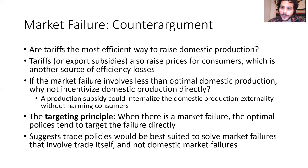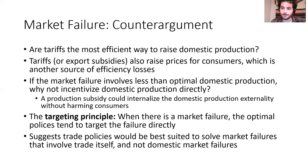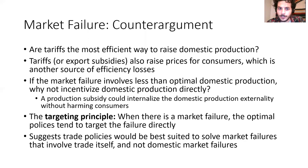This is an example of what's called the targeting principle. It's a general idea that when there's a market failure, the optimal policy is going to tend to target the failure directly. In the case of a positive externality from domestic production, that's a market failure in domestic production, and so the optimal policy should target domestic production directly. The targeting principle would say that a justification for trade policies would be if we have market failures that have something to do with trade itself — something about importing or exporting that motivates the policy, not something going on in the domestic economy.